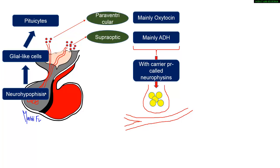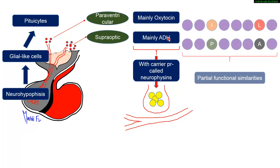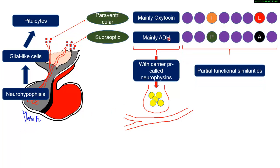We know that there are two types of hormones produced by the posterior pituitary: oxytocin and ADH. The next point to note is that these are peptides — very short peptides — and they have structural similarities.